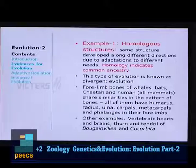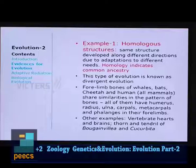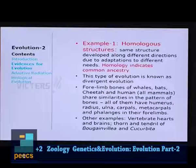Other examples of homologous organs include vertebrate hearts: fish hearts have only two chambers, amphibians have three, reptiles have three with one incompletely partitioned, and birds and mammals have four-chambered hearts. Though the number of chambers differs, the basic structure of the heart is largely the same — indicating common ancestry and divergent evolution. From the plant kingdom, the thorn of Bougainvillea and the tendril of Cucurbita are also examples — though they look different, both originated from the same type of axial buds.